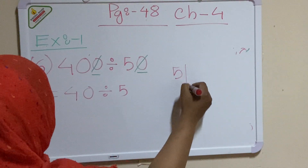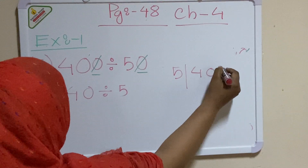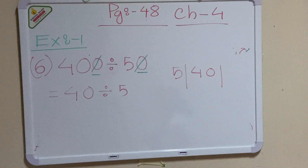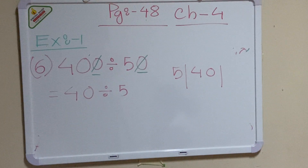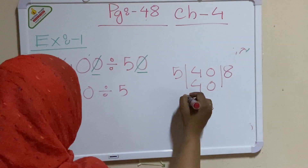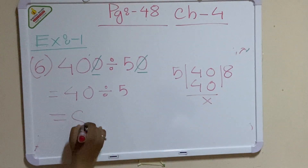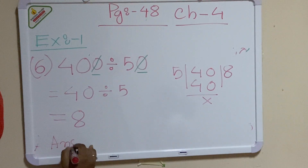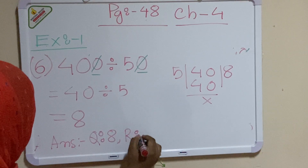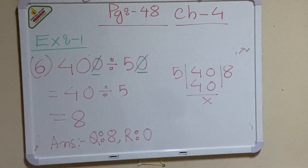Now do the rough work. 40 divided by 5: 4 cannot be divided by 5, so take 40. In the table of 5: 5×1=5, 5×2=10, 5×3=15, 5×4=20, 5×5=25, 5×6=30, 5×7=35, 5×8=40. So I can write 5 eights are 40. The answer is quotient 8, remainder 0.